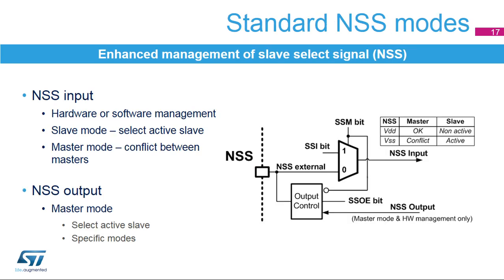The slave select signal is commonly used by the master node to select the slave node for communication. The signal implementation is mandatory in multi-master and multi-slave topologies. Though it's not mandatory in a single master-slave pair, it could be helpful for data flow synchronization regardless of the topology case. The slave select signal can operate either as an input or as an output. The NSS input can be managed by hardware or software depending on the SSM and SSI control bits. As a slave input, it's used to identify itself as the active slave for communication. As a master input, it signalizes a potential conflict between masters in a multi-master system. The NSS only works as an output in master mode and is managed by hardware in a standard or specific control mode. Additional slave select outputs can be provided by the GPIOs under software control.